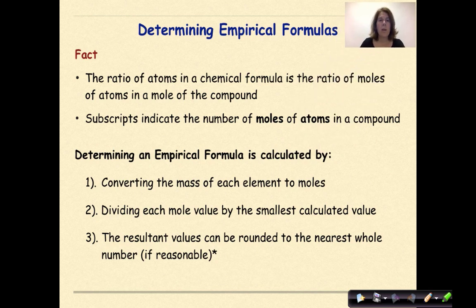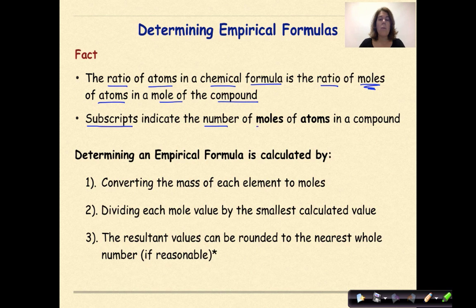Determining empirical formulas. Fact: the ratio of the atoms in a chemical formula is the ratio of moles of atoms in a mole of the compound. In other words, those subscripts — whether they are obvious, like a two or a three, or assumed, like a one — indicate the number of moles of atoms in a compound. You will see questions like this that say: here's a compound, tell me how many moles of a specific element are within that compound.